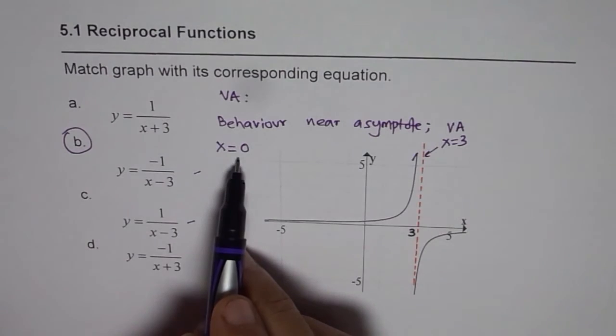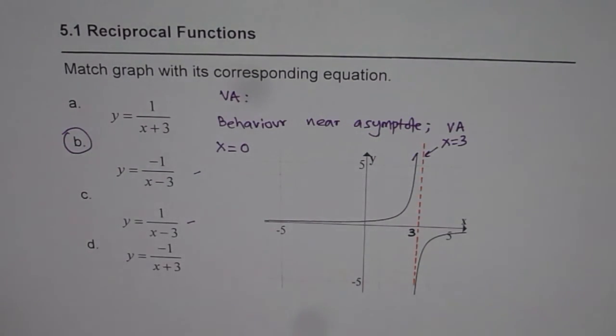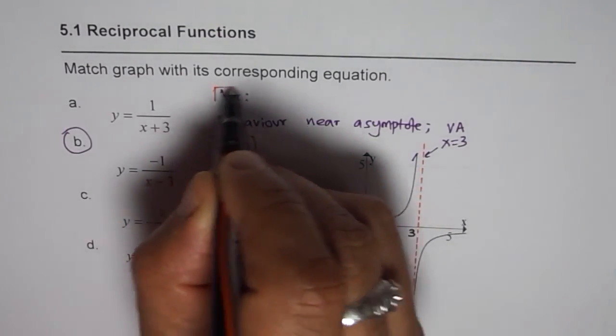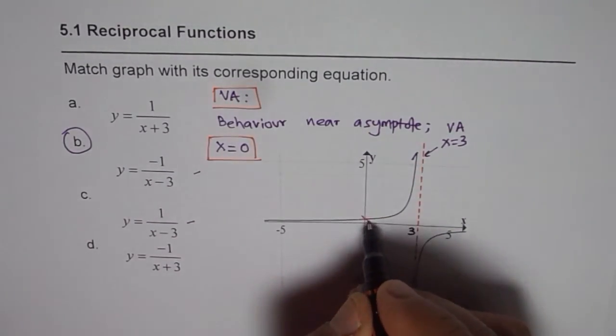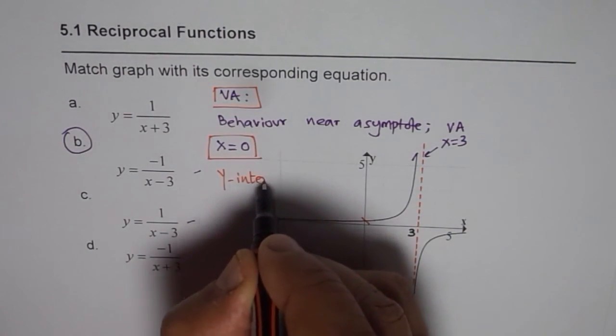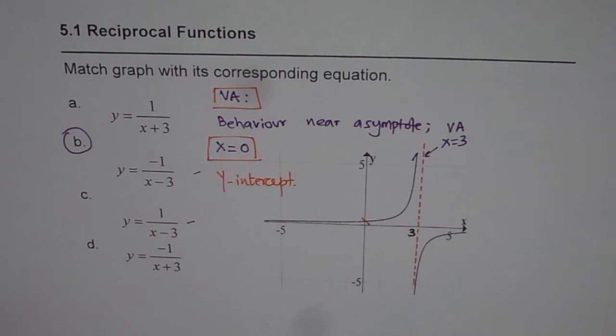It does not require any thinking. So I think this is even a better option. So check for the vertical asymptote and check for the y-intercept to solve such questions or to match such graphs with the equation. I hope that helps. Thank you.